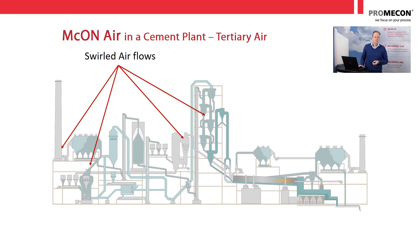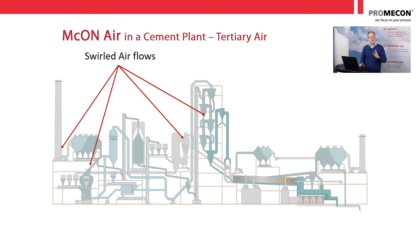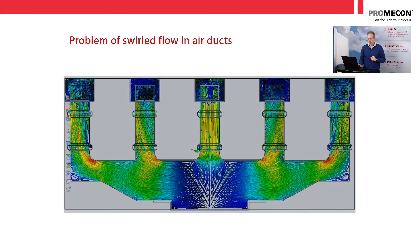Other process parameters also contribute. Look at the kiln preheater tower — you have a lot of cyclones. Every cyclone starts to spin the air, giving you a gas flow that comes out not in a straight line but always with a rotation that you have to account for. So your measurement has to tackle this problem.